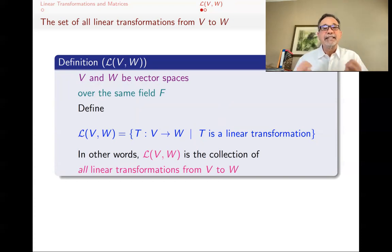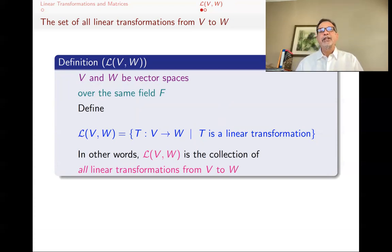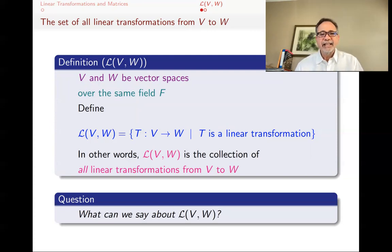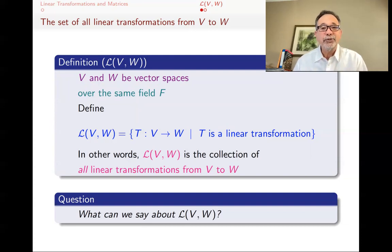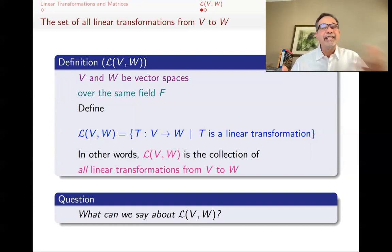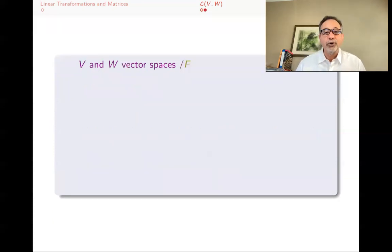This is a linear algebra course, so we're not really interested in just one linear transformation — we want to see what we can say about all of them. The question is: what can you say about this Script L of V, W? It's a set of linear transformations. And if you're in a linear algebra class, you have an irresistible urge to ask: can I make it into a vector space? We have V and W as vector spaces, and we're looking at linear transformations between them — can we make that set into a vector space? And I wouldn't ask if you couldn't.